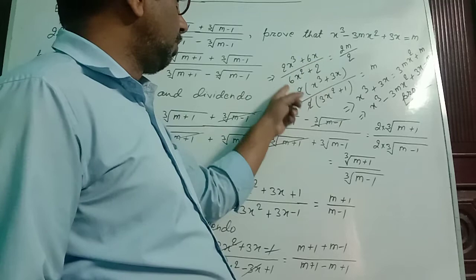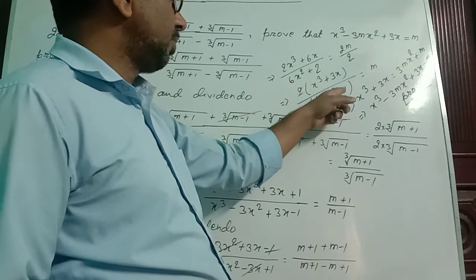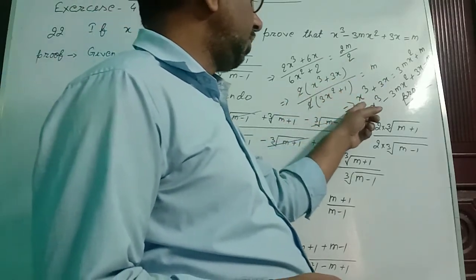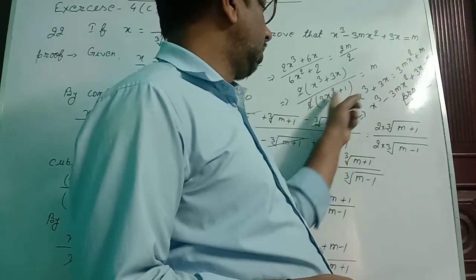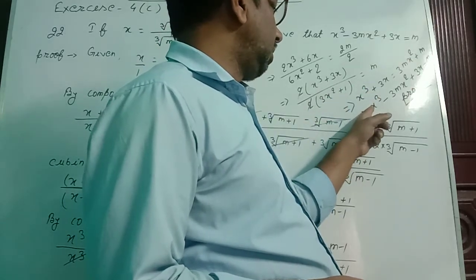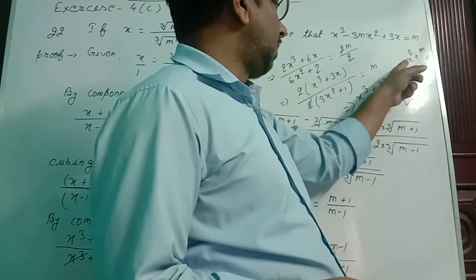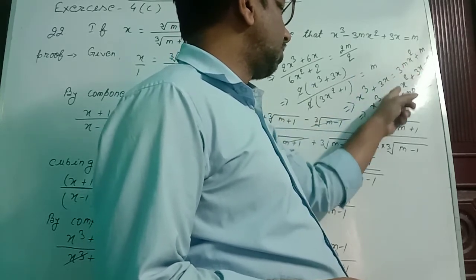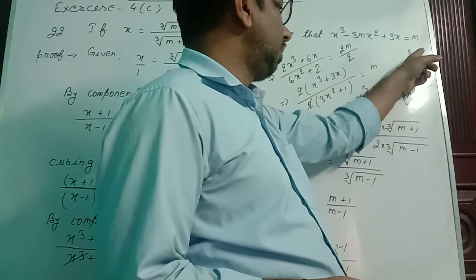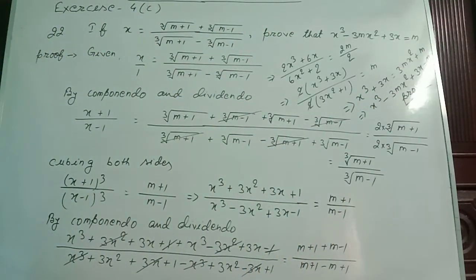Taking 2 common: x cube plus 3x by 3x square plus 1, this side 2 and 2 cancel, equal to m. By cross multiplication, we are getting x cube plus 3x equals 3mx square plus m. Rearranging: x cube minus 3mx square plus 3x equals m. Proved.